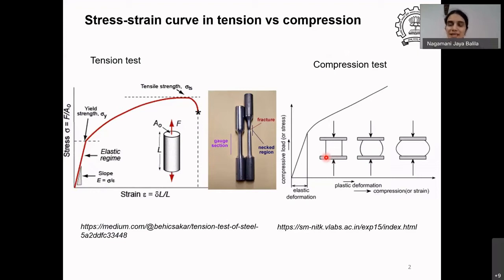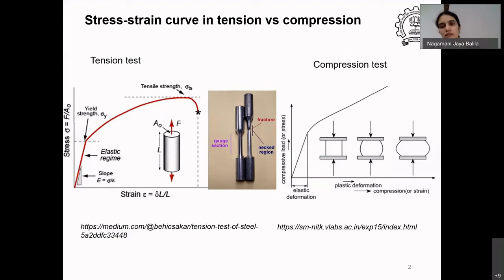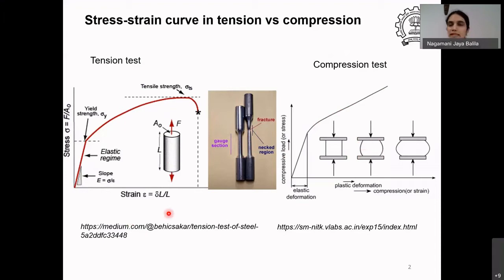One thing about a compression test is it's easier to do than a tensile test — you don't need the grips like you do for a tensile test. In a compression test you can just place the sample on a flat base and push down with the loading fixture. The initial elastic regime and yield point are still present in compression, but the deformation being compressive means the specimen becomes thicker in cross-section and shorter in height instead of getting thinner and longer. The definition of strain and stress remains the same for both.